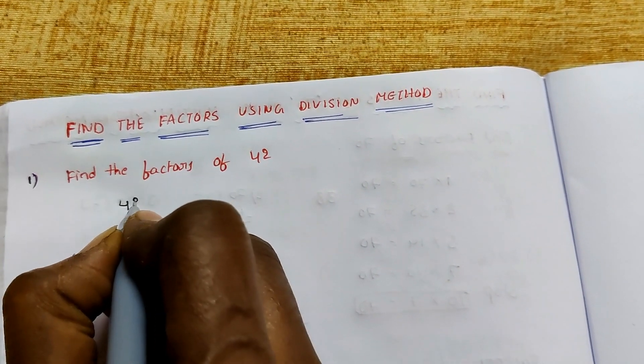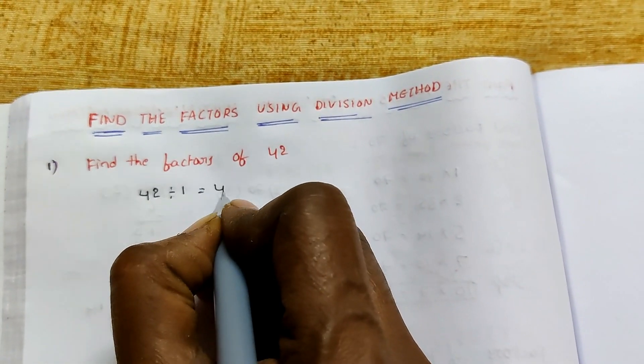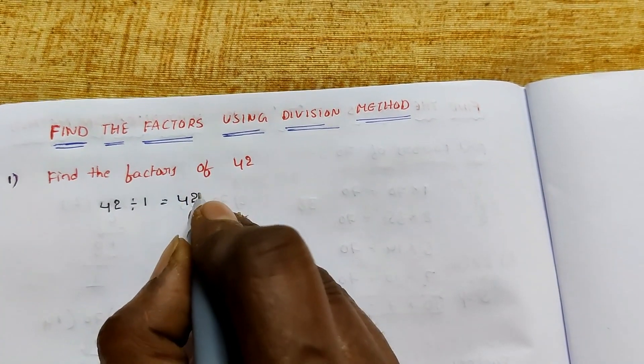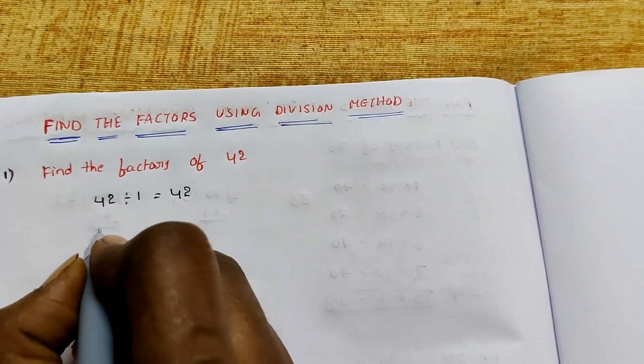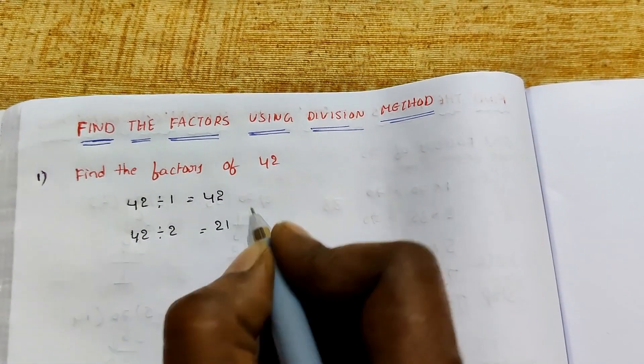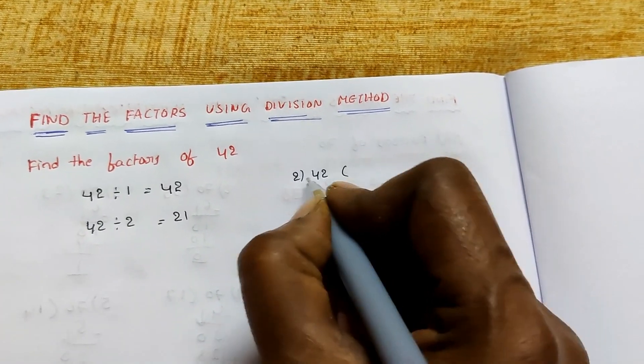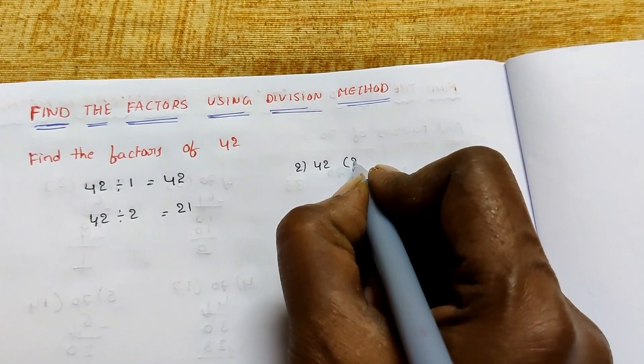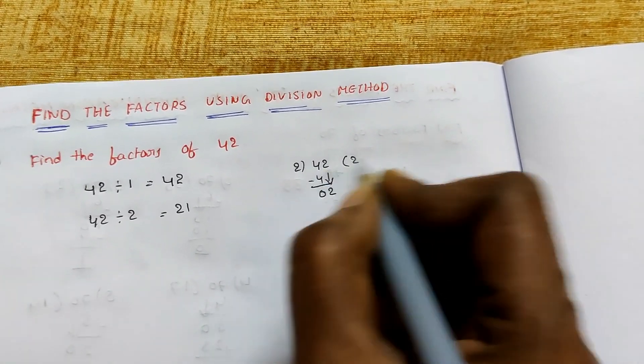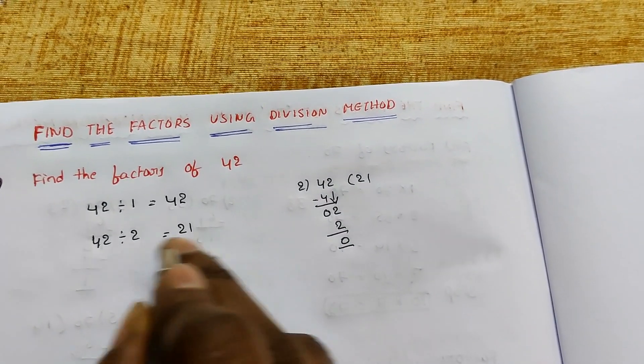Find the factors of 42. So 42 divided by 1 gives remainder 0 and quotient 42. 42 divided by 2 gives 21 as the quotient, remainder 0. Check: 2 times 21 equals 42. Subtract to get 0, 2 down, 1 times 2, remainder 0. So 2 and 21 are factors of 42.